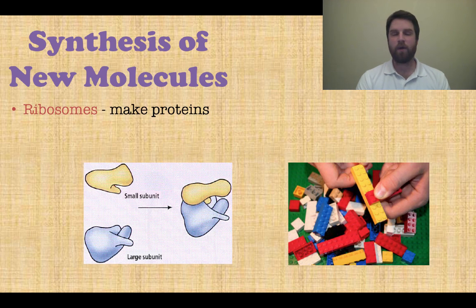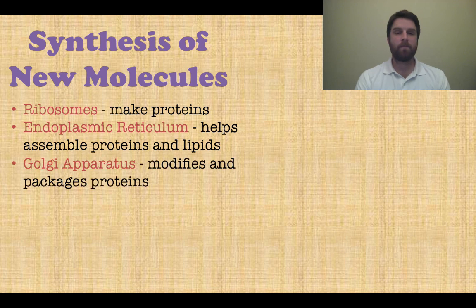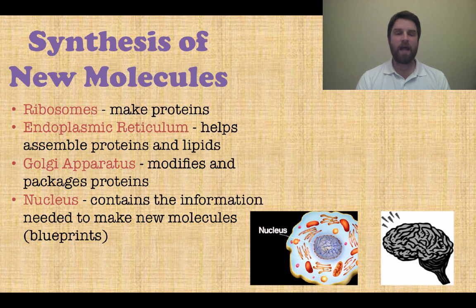What organelles actually synthesize new molecules? First, ribosomes make proteins — think of them like Legos, just packaging pieces and putting them together. Next, endoplasmic reticulum helps assemble these proteins; think of it as the assembly line that proteins and lipids go through right after they are made, like a conveyor belt. The Golgi apparatus modifies, packages, and secretes materials within the cell — it's the FedEx, UPS, or post office of the cell, packaging things and shipping them off to where they need to go. Finally, the nucleus is the brain and control center of the cell, where all the information — the blueprints — are kept to make these new molecules.